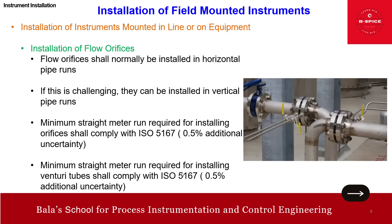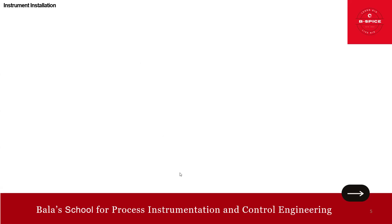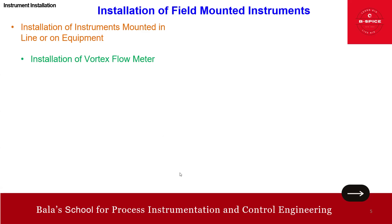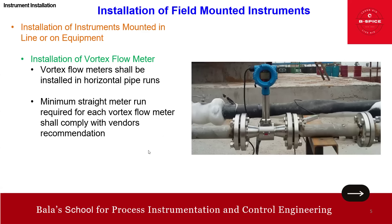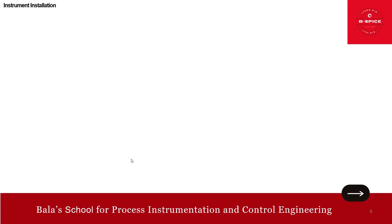Now we'll talk about the vortex meter. The vortex meter shall be installed on the horizontal pipeline. The minimum straight meter run required for each vortex shall comply with vendor recommendation, but alternatively it ranges from 20D to 40D, and can be reduced to 10D with flow conditioning. This is all in line with API RP 551 standard.